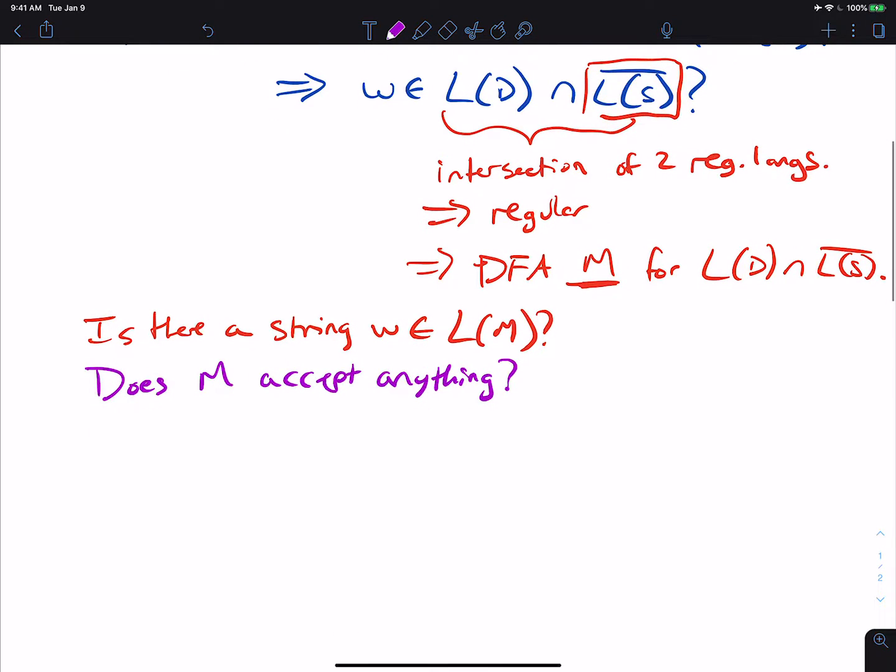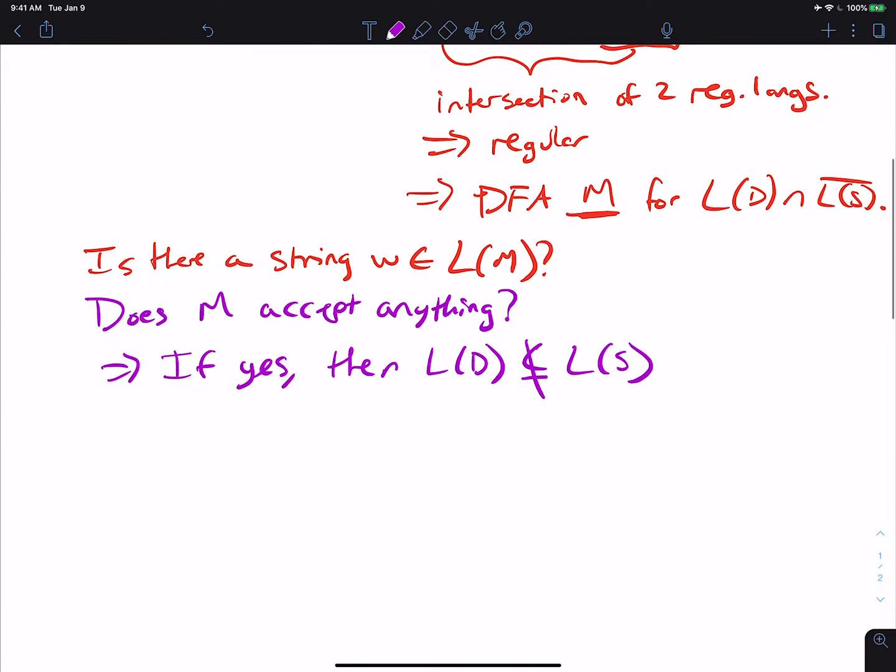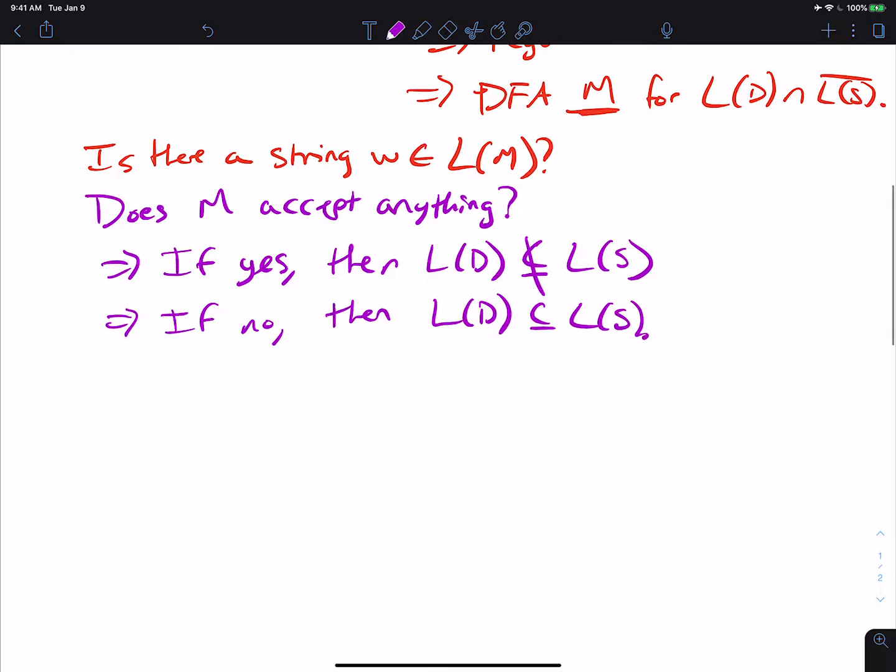So then if yes, then language of D is not a subset of L of S. And if no, then it is a subset. Okay, so how do we actually decide this?